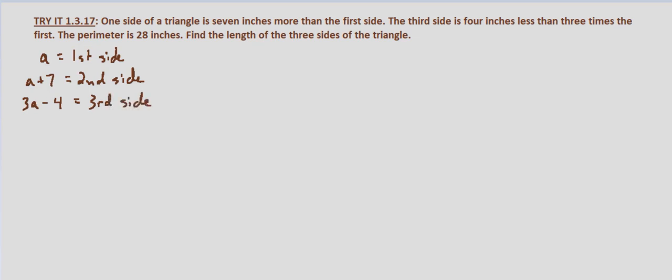So let's draw our picture. It doesn't have to be accurate other than we know it's a triangle. One side length is A, the other side length is A plus seven, and the third side length is three A minus four.